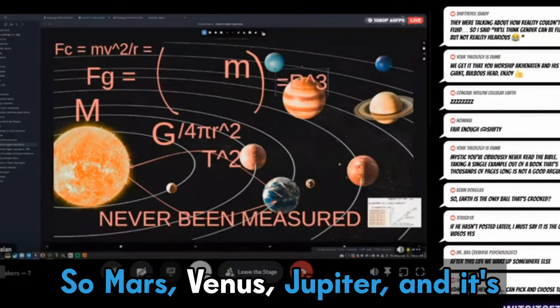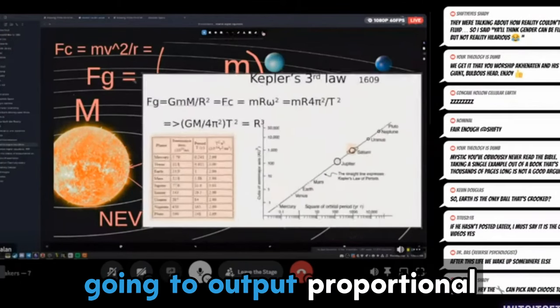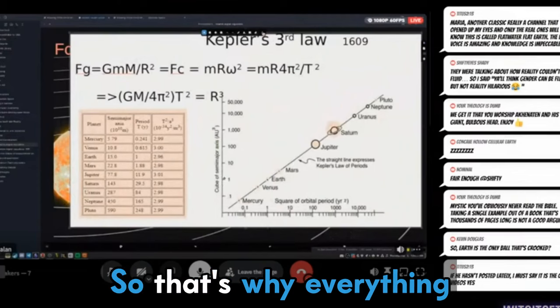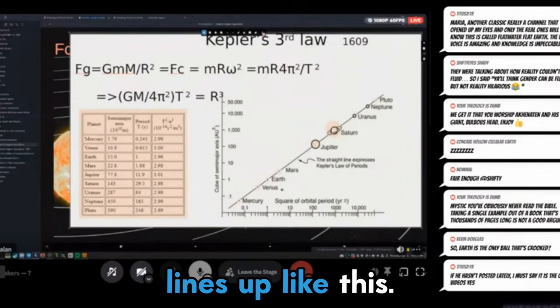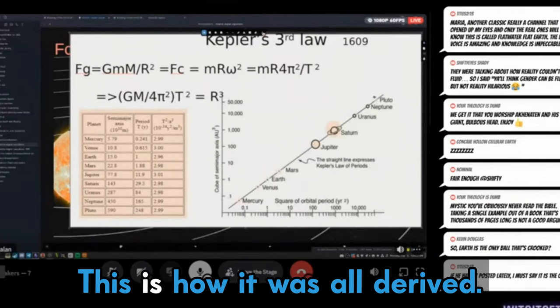And then you apply it to the periodicity of the movement of any planet, right? So Mars, Venus, Jupiter. And it's going to output proportional distances for everything. So that's why everything lines up like this. This is how they got their scale for everything. This is how it was all derived.